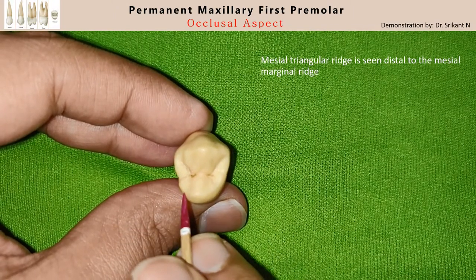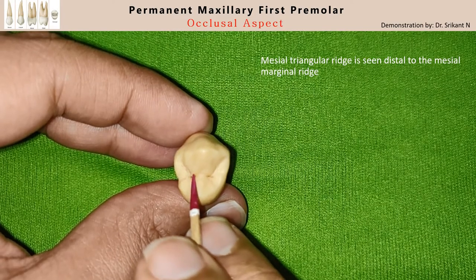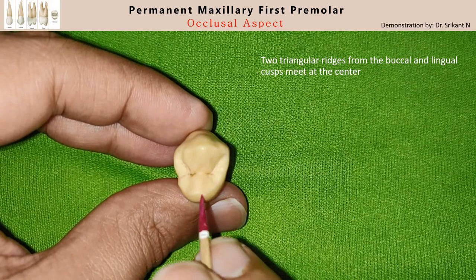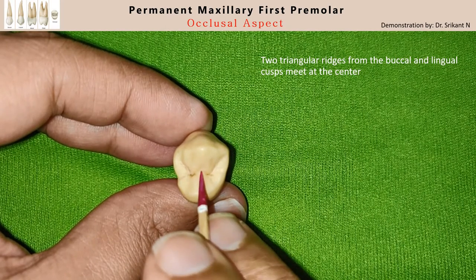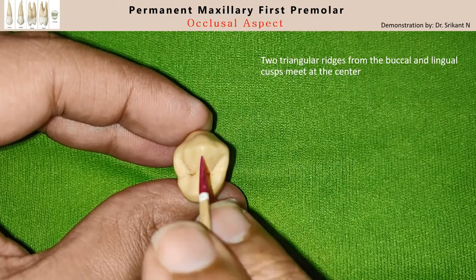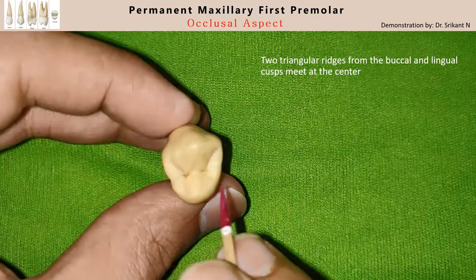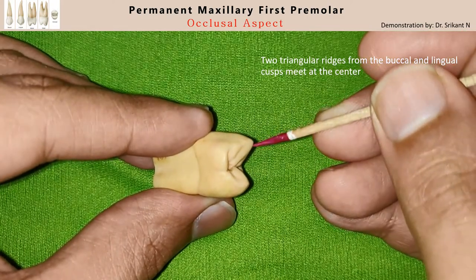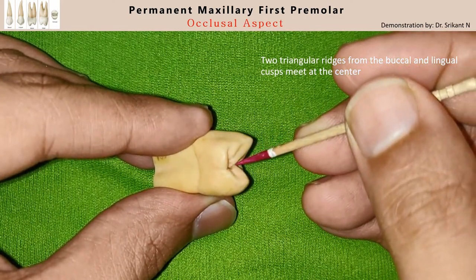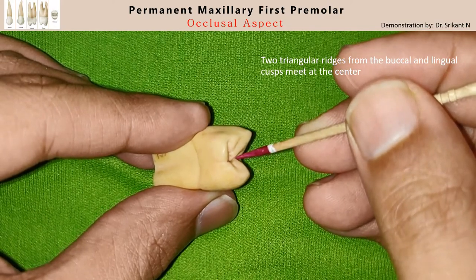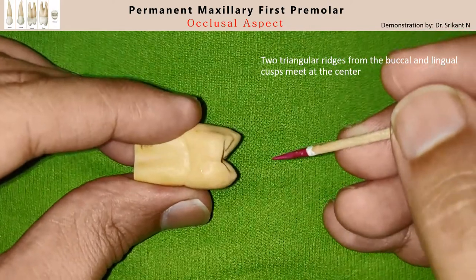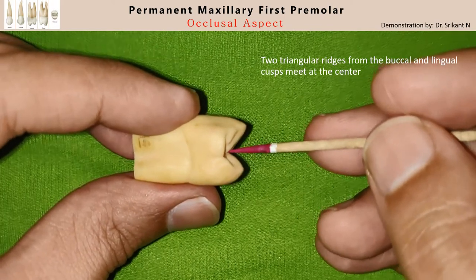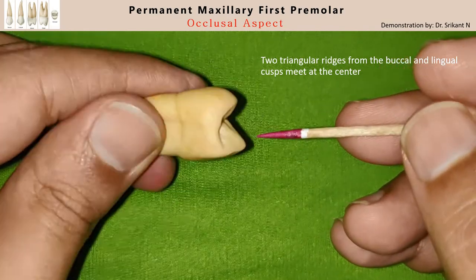From the buccal cusp down to the center, and from the lingual cusp down to the center of the tooth, you see two triangular ridges which meet together to form a transverse ridge. You can appreciate the triangular ridge from a slight angle. The triangular ridge goes down to the center and meets the opposing tooth. Generally, the depth of the transverse ridge is deeper than the marginal ridges, and from both the mesial and distal aspects you cannot fully see the depth of the meeting point of the triangular ridges.